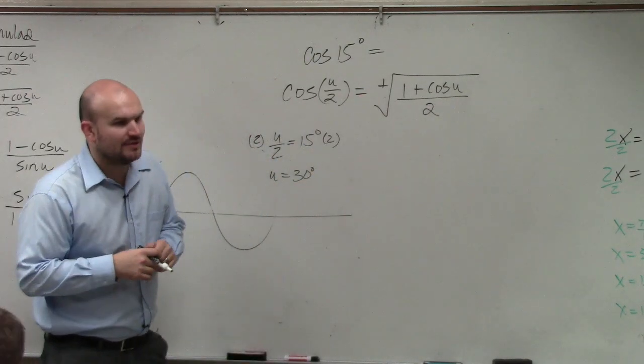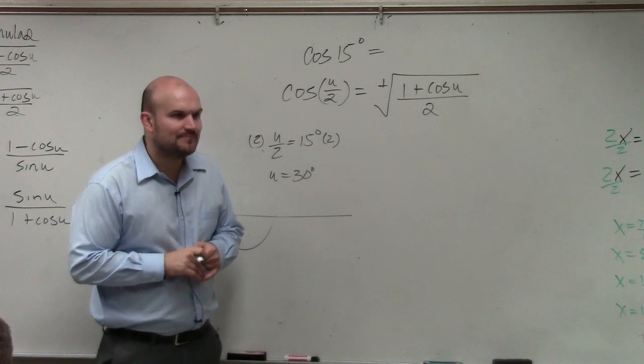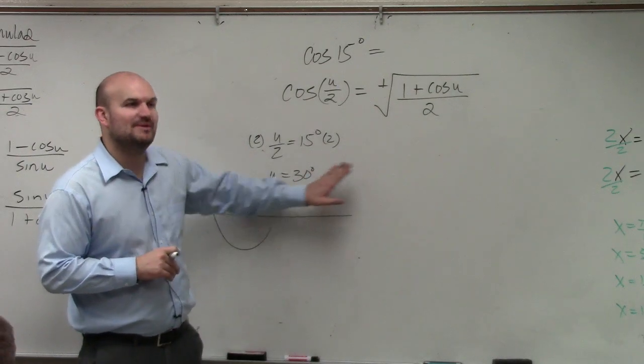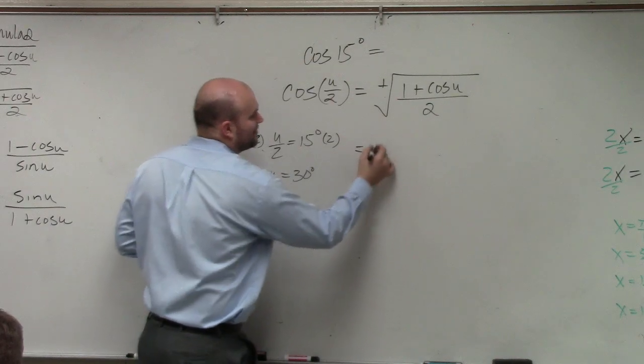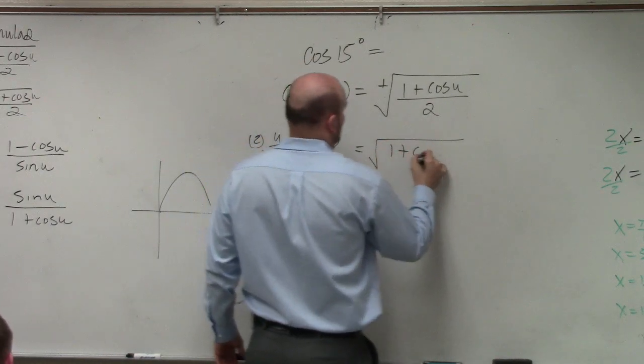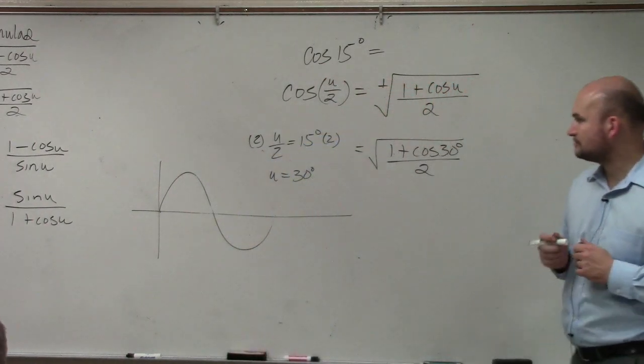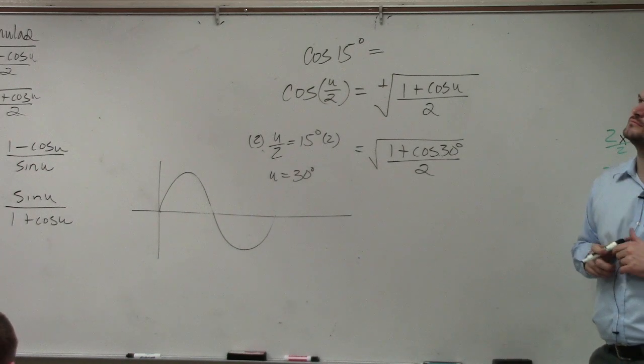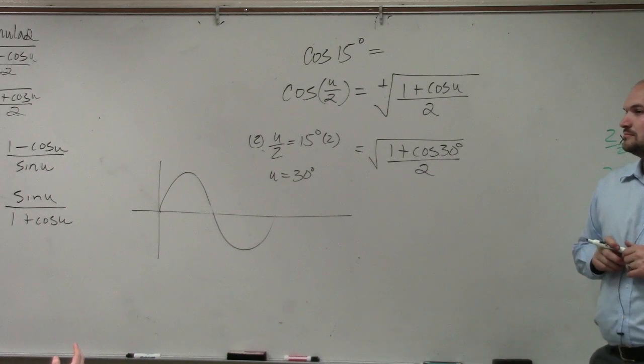So we're not really actually doing the plus or minus. We're actually just doing the positive. So now, what we're simply going to do is take the u and plug them in for you. So therefore, we're simply going to rewrite this as 1 plus the cosine of 30 degrees all over 2. After you figure out what u is, you rewrite it as, you just plug it in.